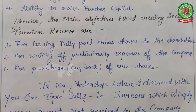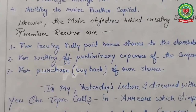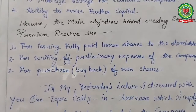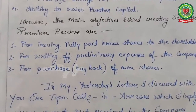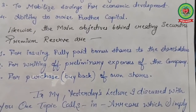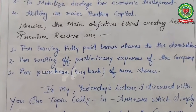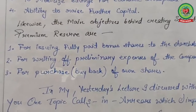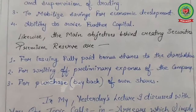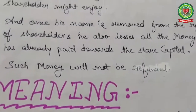The main objectives behind creating a security premium reserve: all the security premium amounts under security premium reserve are used for — first, issuing fully paid bonus shares to shareholders; second, writing off the preliminary expenses of the company; and third, purchase or buyback of own shares. So these are the three objectives for security premium reserve.